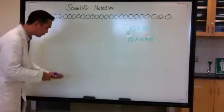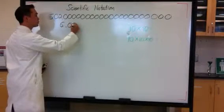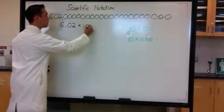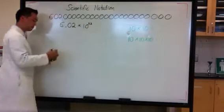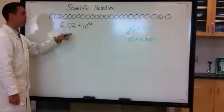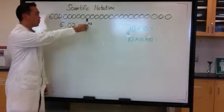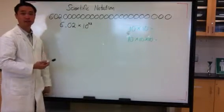The scientific notation form for this would be 6.02 times 10 to the power of 23. I would much rather write this than this. So scientific notation is a short form, a way to get rid of all these zeros yet still write the same number.